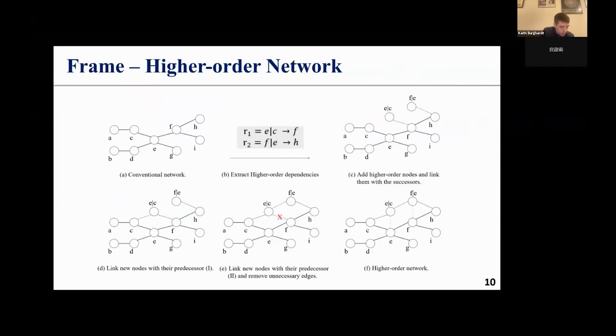Second, building higher-order dependency networks. According to the order of the nodes in the sequence, the edges between two nodes are established in turn. At this time, the network has satisfied the first-order dependency. After extracting higher-order dependency, adding higher-order nodes into the conventional network. The edges in the network are adjusted by the higher-order dependency.